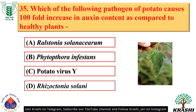Question number 35. The pathogen of potato that causes a 100-fold increase in auxin content compared to healthy plants is Potato virus Y — option C.